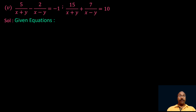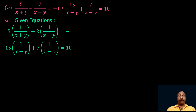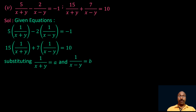The given equations can be written as: 5 into 1 by (x plus y) minus 2 into 1 by (x minus y) equals minus 1, and 15 into 1 by (x plus y) plus 7 into 1 by (x minus y) equals 10. Since both equations have the denominators x plus y and x minus y, we substitute 1 by (x plus y) equal to a and 1 by (x minus y) equal to b. The equations become 5a minus 2b equal to minus 1, and 15a plus 7b equal to 10.